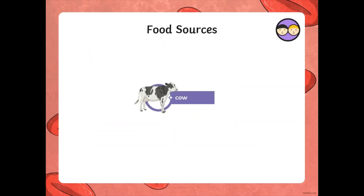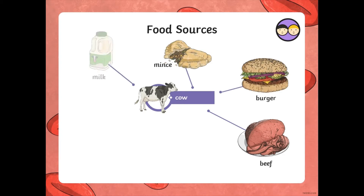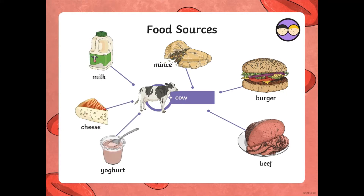What about a cow? Beef, of course, which in turn would make burgers. Also mince, milk, cheese, yoghurt, and cream.